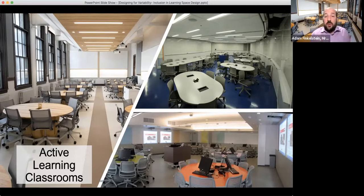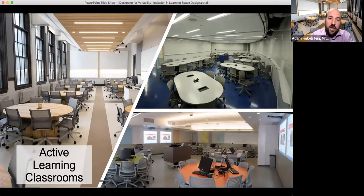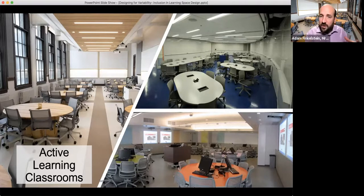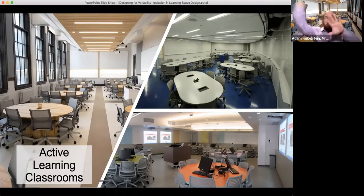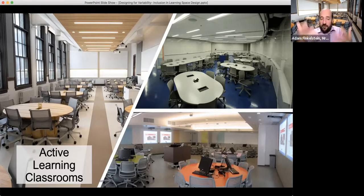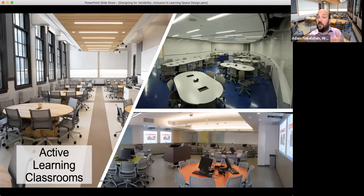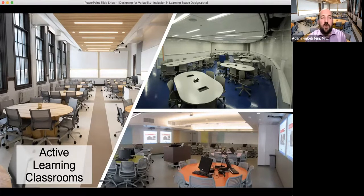This also goes into the core design of active learning classrooms, which are really designed to promote active learning from the ground up. Examples include tables in round circles where students can communicate in all areas, writable walls around the room, multiple screens for different opportunities, and students being able to share content back digitally and represent their own ideas as part of the process.